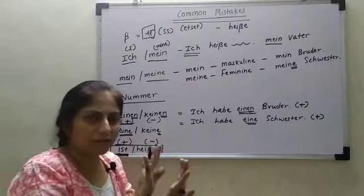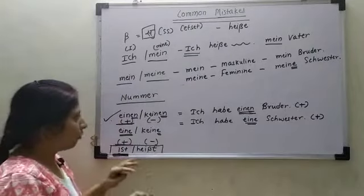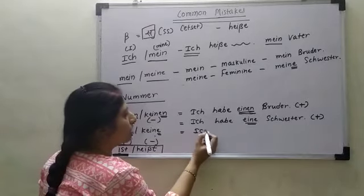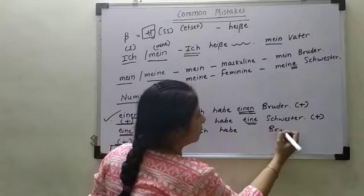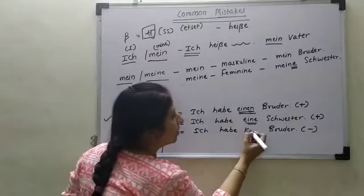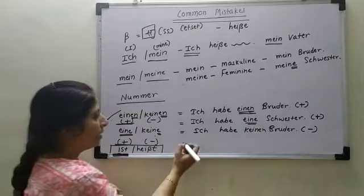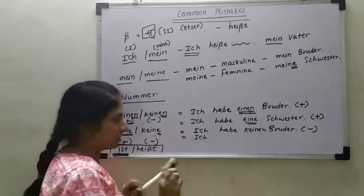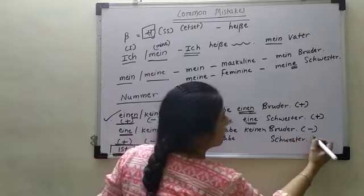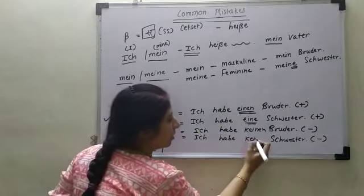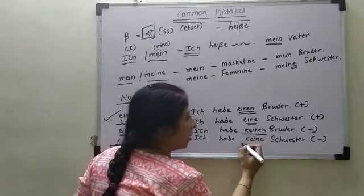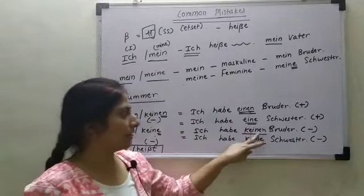Now suppose my answer is negative — I don't have a sister or I don't have a brother. Then what options do we have? 'Kein' and 'Keine.' For male we use 'kein' — for example, 'Ich habe keinen Bruder' means I don't have a brother. Then if I want to say I don't have a sister — Schwester is female — it should have 'keine': 'Ich habe keine Schwester.' So remember: 'keine' is for female and 'kein' is for male.